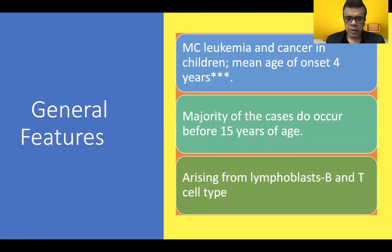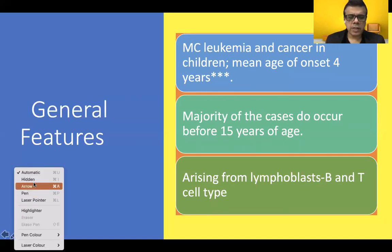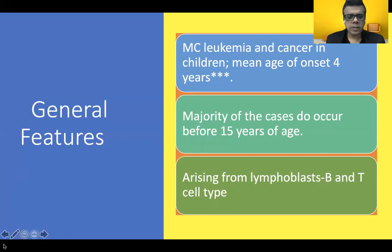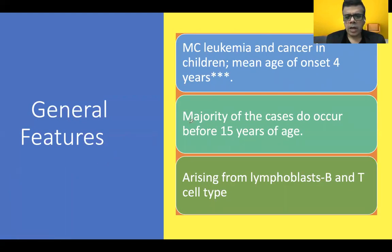Acute lymphoblastic leukemia is the most common leukemia and cancer in children. The mean age of occurrence is usually around four years, so the average age of onset is four years — that is the hallmark of acute lymphoblastic leukemia. The majority of cases occur before 15 years of age.